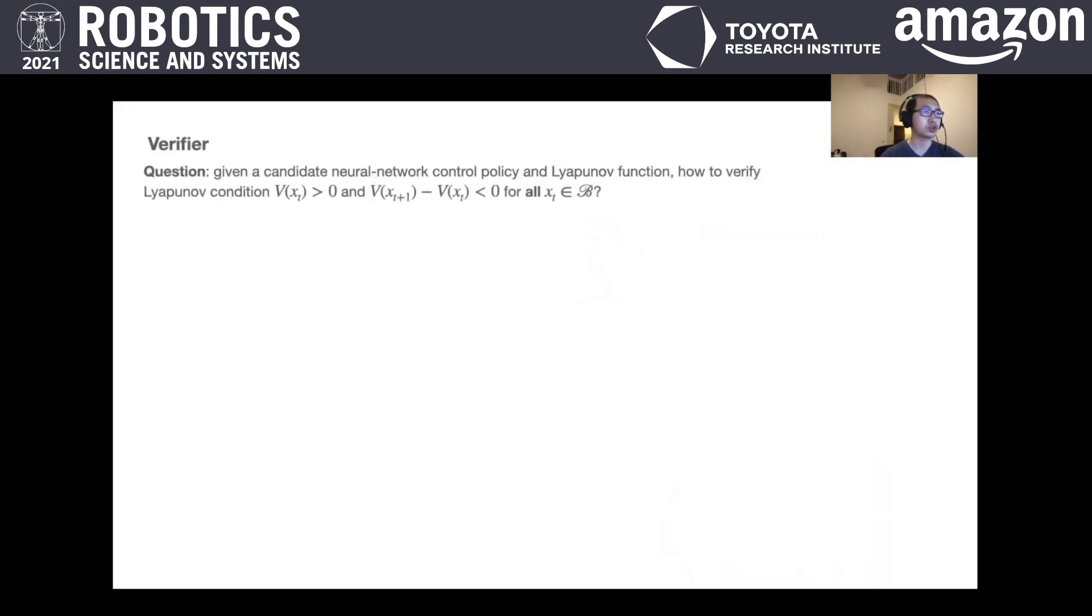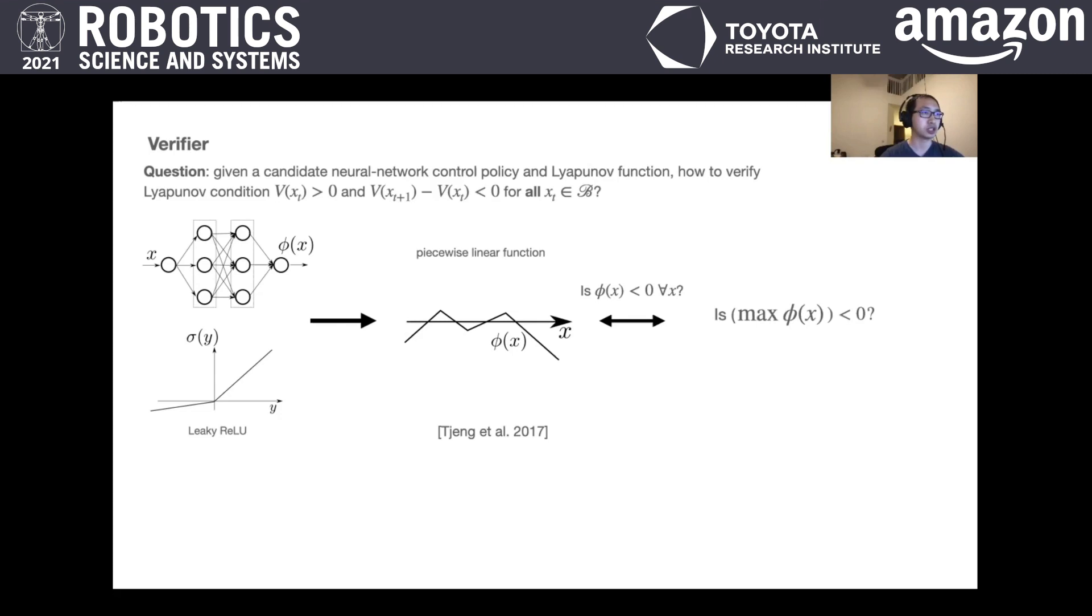In order to verify the Lyapunov condition for all of the infinitely many states, we build upon the idea by Tjeng which verifies properties of neural networks through solving mixed integer programs. With leaky ReLU units, the network output is a piecewise linear function of the input. To verify that this function is always negative, it is equivalent to maximizing the function and checking if the maximum is negative.